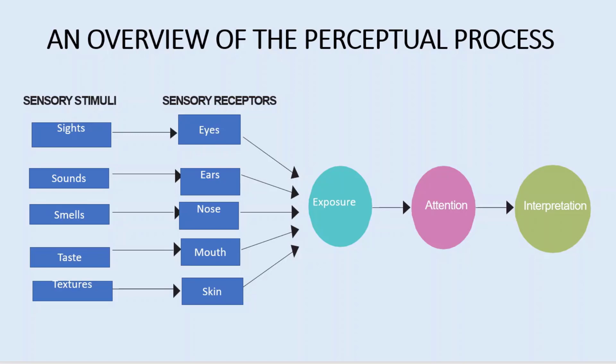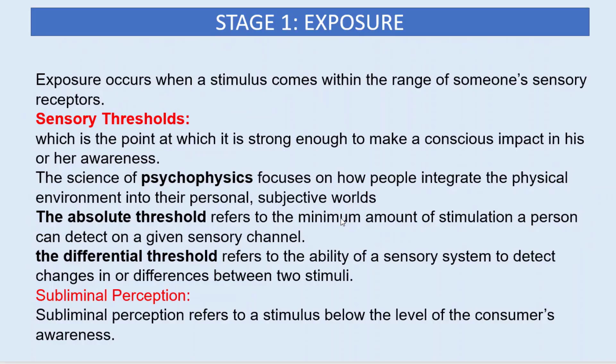After receiving sensory stimuli through sensory receptors, there are three processes that follow: exposure, attention, and interpretation. First, when marketers send a stimulus, consumers have exposure to that stimuli. Second, they will give attention to that sensory input. Finally, they will make an interpretation.